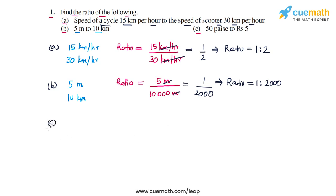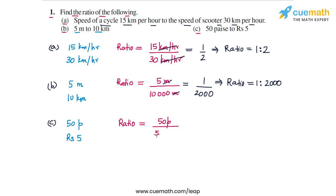Lastly, let's do part C. In part C, the two quantities are 50 paise and rupees 5. Again, the units are different, so we will write both quantities in the same units and then take the ratio. Let's write both quantities in paise. The ratio will be 50 paise by rupees 5. Rupees 5 will be 500 paise because 1 rupee is 100 paise. The units cancel out and we have 50 by 500, or 1 by 10.